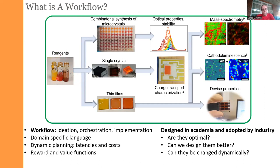How does it work? You start with a set of reagents, which you select based on prior knowledge. You can take these reagents and use a robot to synthesize a library of microcrystals, then characterize their stability and optical properties. You can use the same reagents to make thin films — and study them by making a device, studying cathodoluminescence, or mass spectrometry. Or you can grow single crystals and study them on the SNS, or make a device for studying transport or stability.